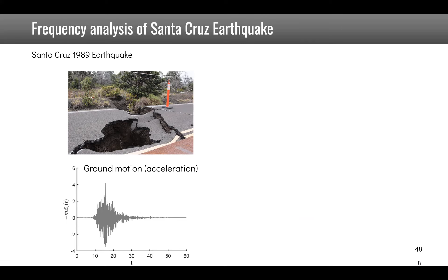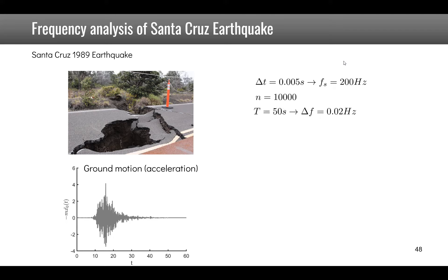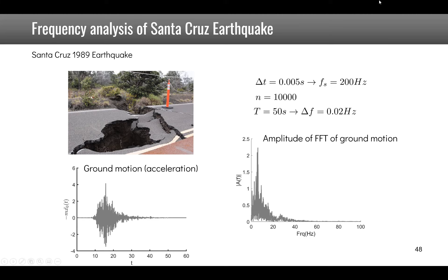Another example is the Santa Cruz earthquake signal, recorded with ΔT = 5 ms, giving fₛ = 200 Hz. With 10,000 points, the total time is 50 seconds and frequency resolution is 0.02 Hz; the useful spectrum extends to fₛ/2 = 100 Hz. The Fourier transform clearly shows that this earthquake has its main excitation components in the low frequency range, below 10 Hz.